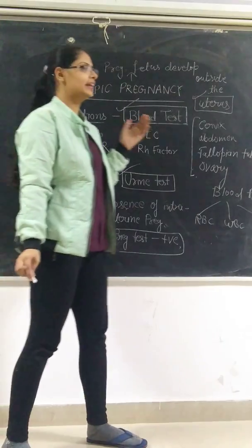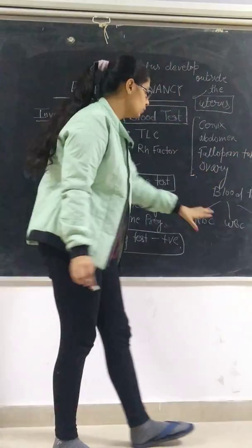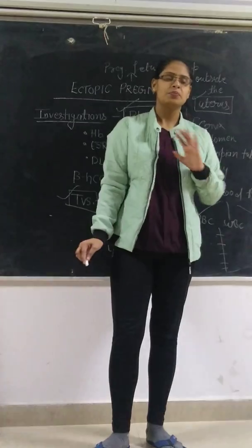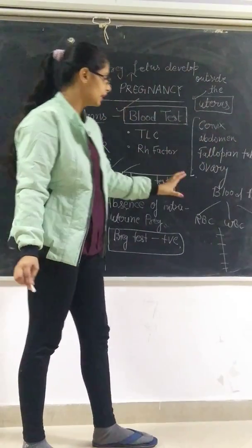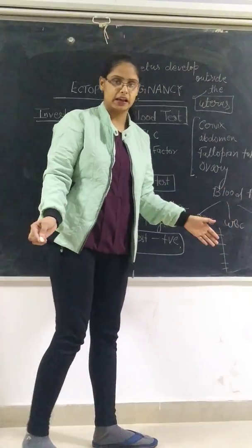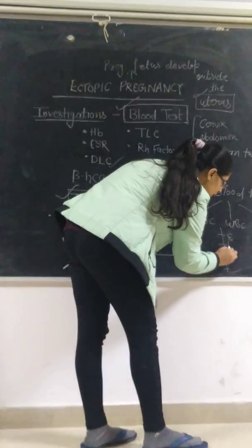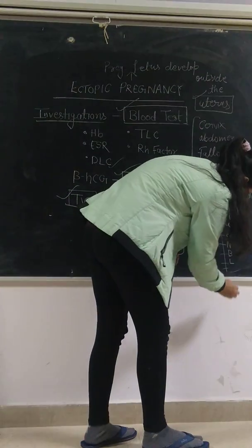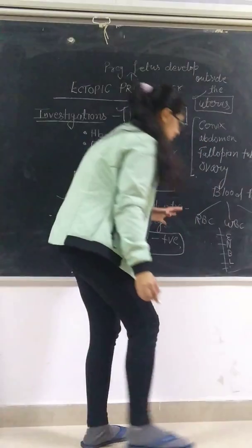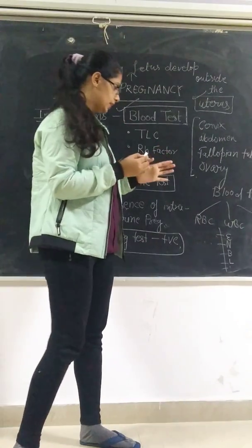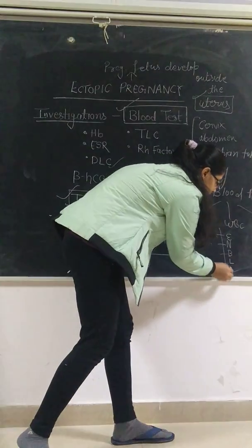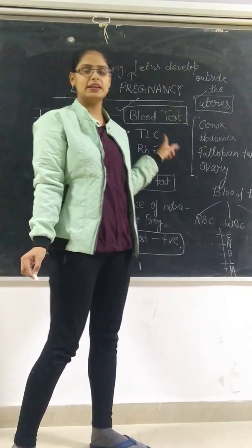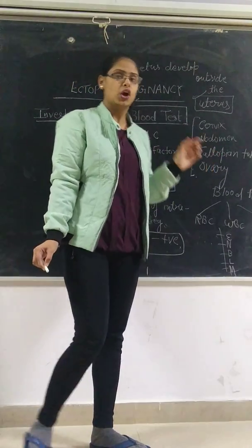DLC is differential leukocyte count. The difference is that WBC are of different types like eosinophil, basophil, neutrophil, lymphocyte, and monocyte. We have to look at the numbers of different types which are eosinophil, neutrophil, basophil, lymphocyte, and monocyte. We have to look at their numbers.